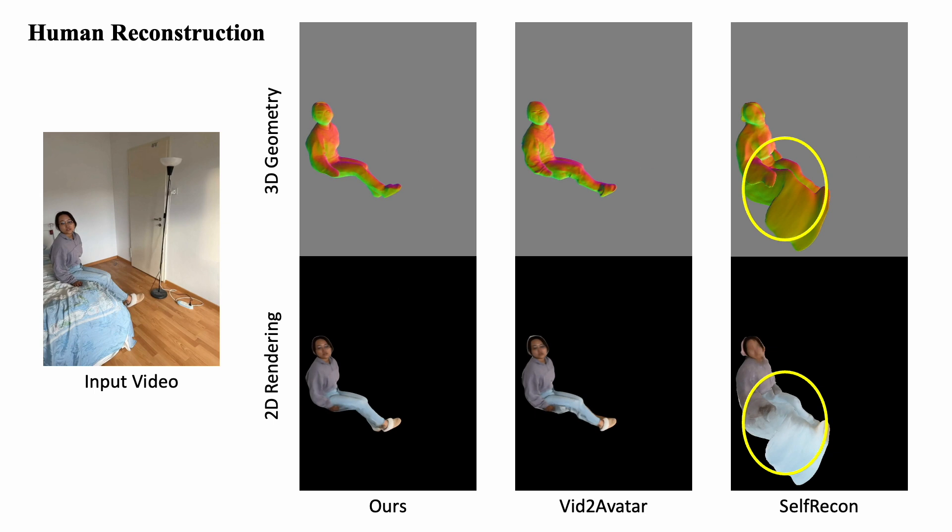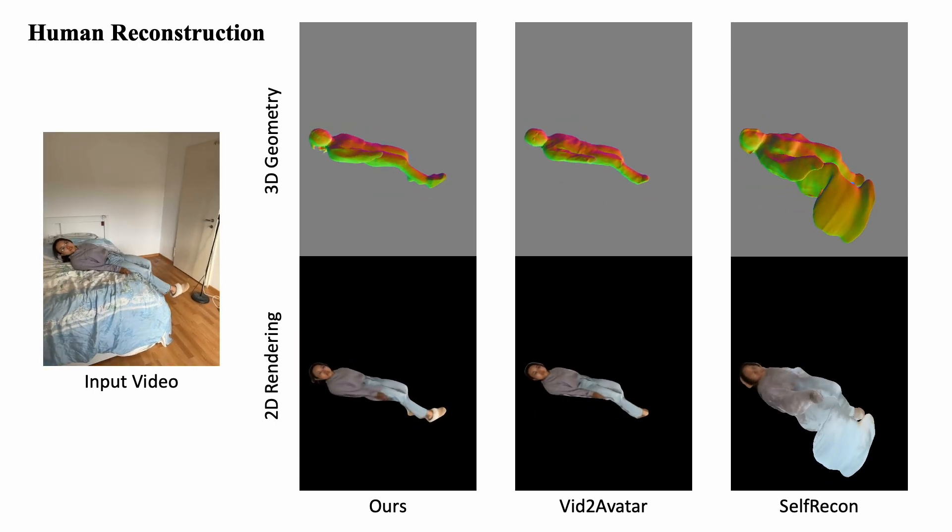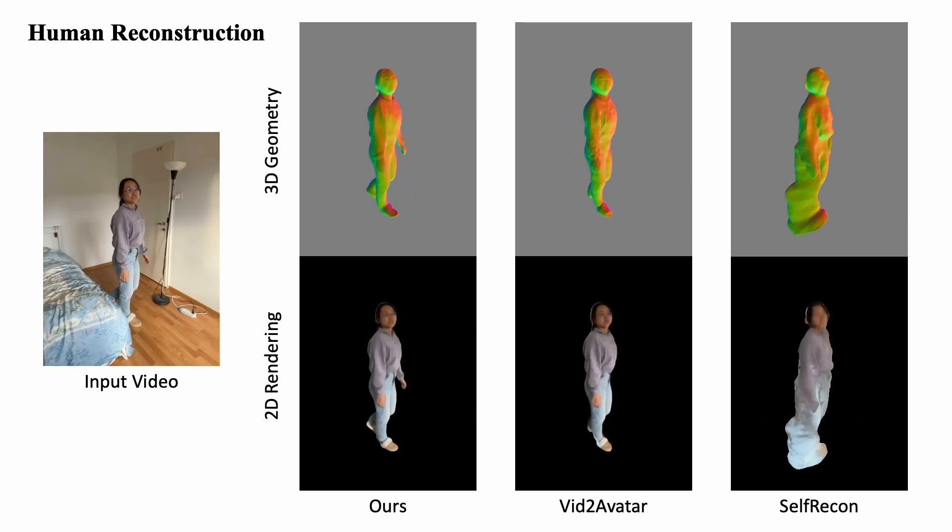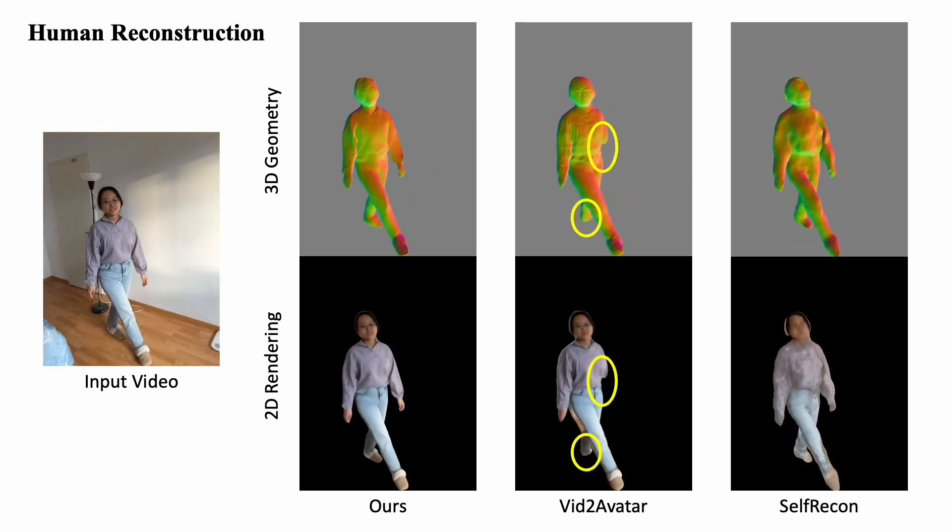Vid2Avatar, employing a self-supervised decomposition loss for foreground-background separation, leads to truncated bodies when initial human poses are inaccurate.